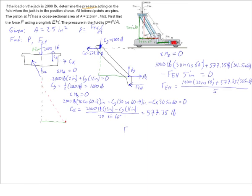Okay, we know our FEH now, but that's not what the question asked for. It asks for the pressure inside the fluid, which it told us is equal to FEH over the area. The area is 2.5 square inches. That's going to be equal to 6,000 pounds over 2.5 square inches.